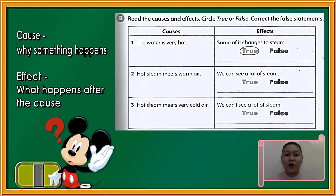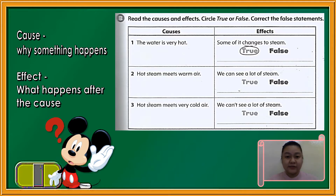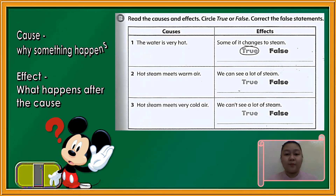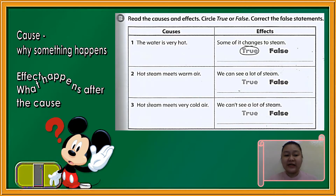Now, on letter B, still on your workbook page 23, read the cause and effect. Circle true or false, and correct the false statement. Do you remember the cause and effect? Cause is why something happens, and effect is what happens after the cause.